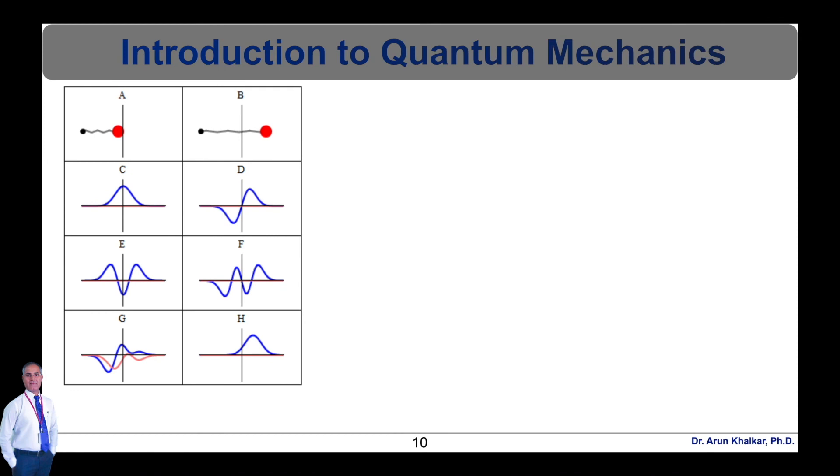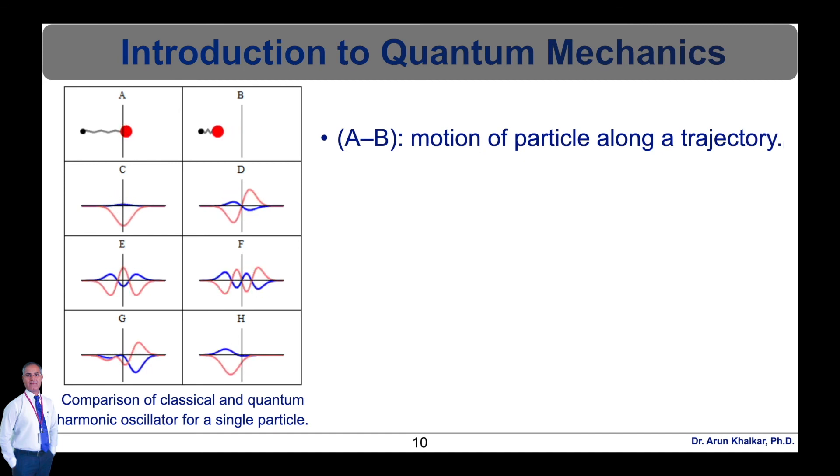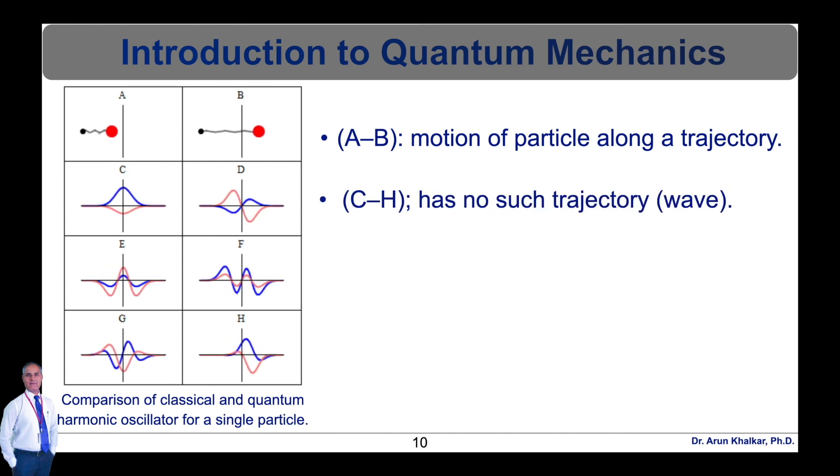The comparison of classical and quantum harmonic oscillator concepts for a single spinless particle is shown in this diagram. The two processes differ greatly. In this animated diagram, the classical process from A to B is represented as the motion of a particle along a trajectory. The quantum process from diagram C to H has no such trajectory. Rather it is represented as a wave.